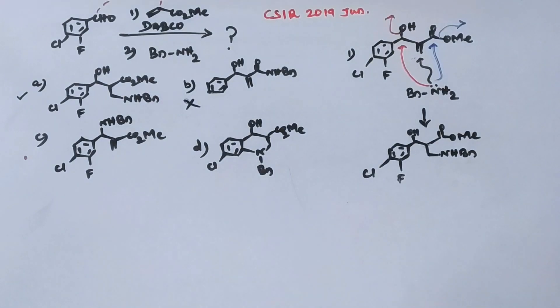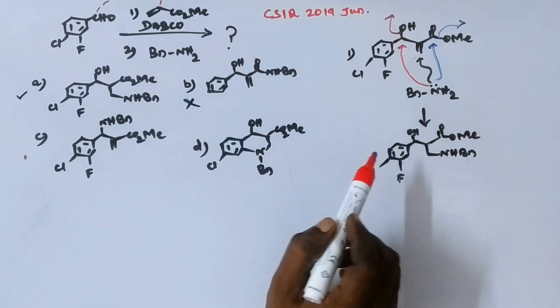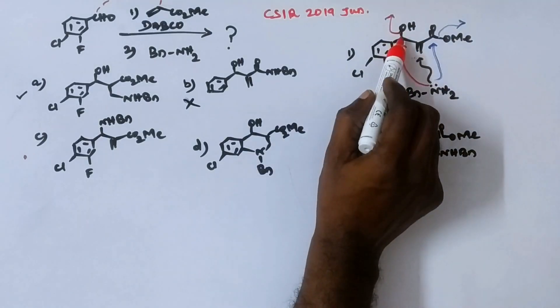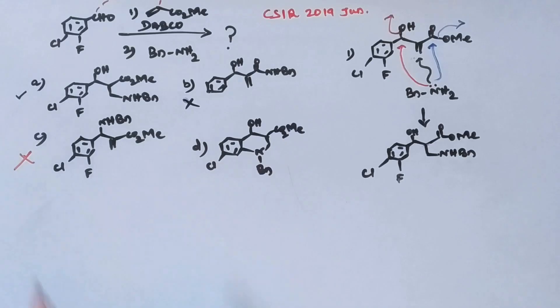So in order to accomplish this reaction, you need to convert that hydroxyl group into a leaving group by protonating it, by using Lewis acid, by converting into tosylate or triflate or by implying Mitsunobu condition. So no conditions have been used here. So the substitution in the place of hydroxyl group is not possible. So option C is also not possible.